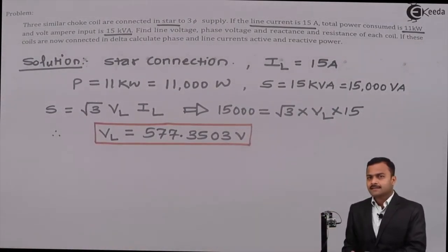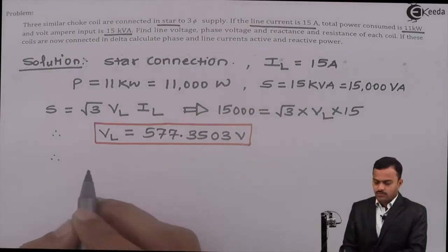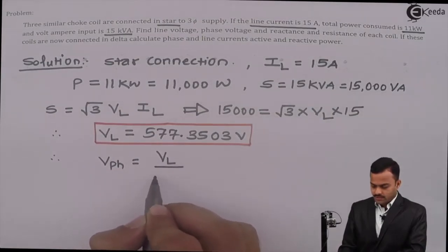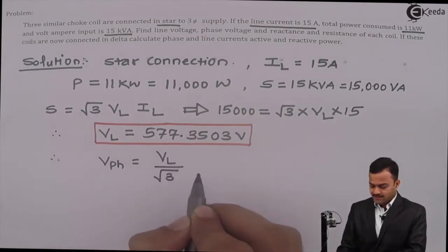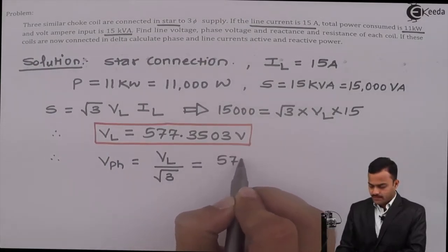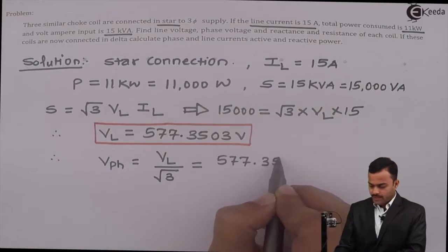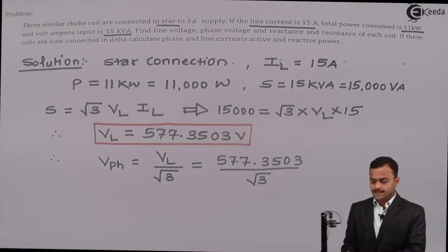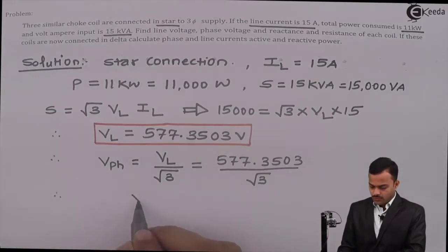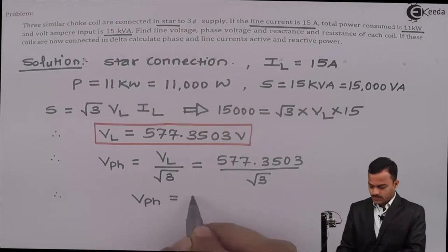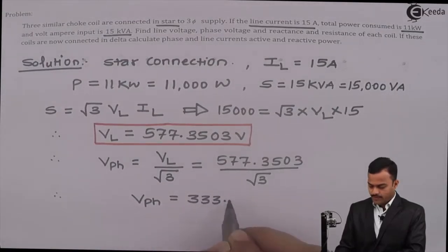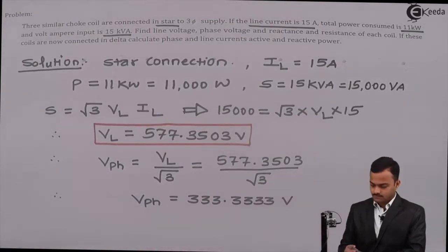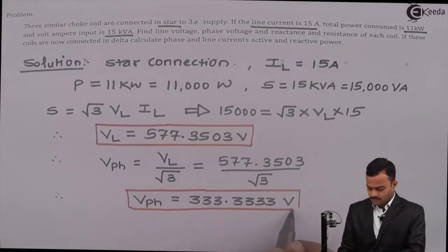It is a star-connected load, therefore phase voltage equals line voltage divided by √3. So VPH = 577.3503 / √3 = 333.3333 volt.